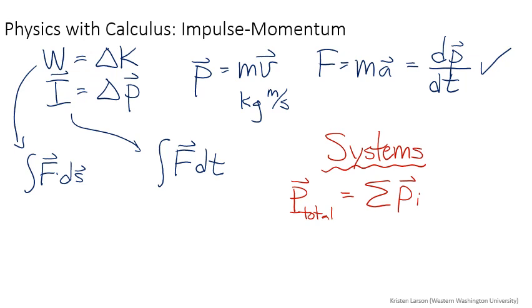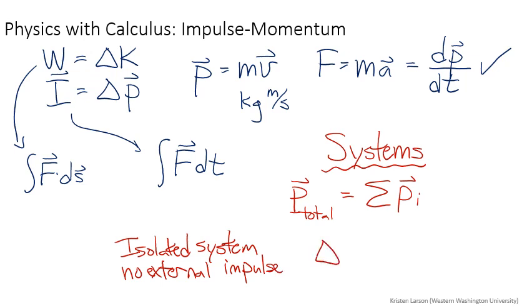For an isolated system, that means there's no external impulse. So the change in the total momentum is zero, and we say momentum is conserved.